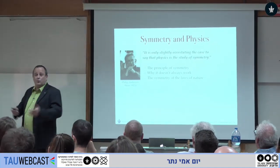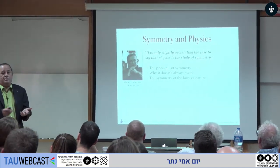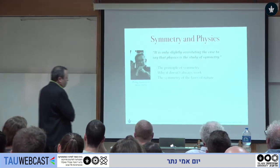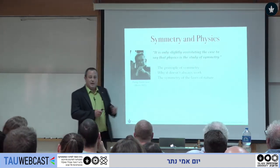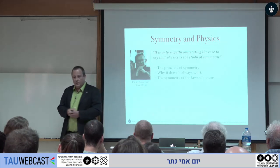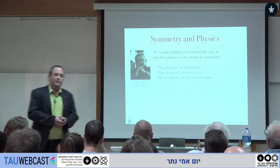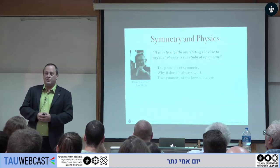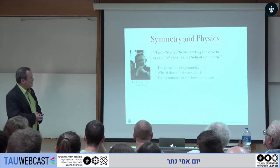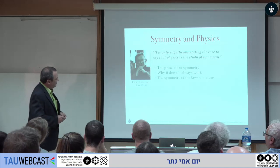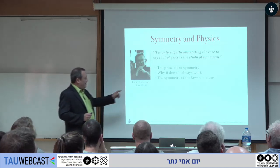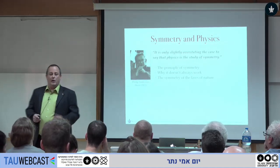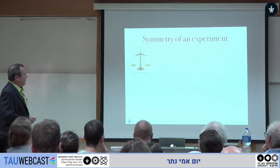I want to describe the so-called principle of symmetry — the principle in which we use symmetry to study physical objects — and then explain why it doesn't always work. I also want to say a few words about the symmetries of the laws of nature itself, which will form the basis of Noether's theorem.